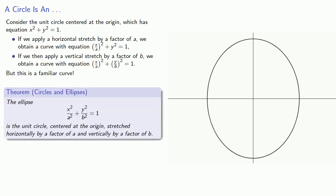Namely, the ellipse is the unit circle centered at the origin, stretched horizontally by a factor of a, and vertically by a factor of b.